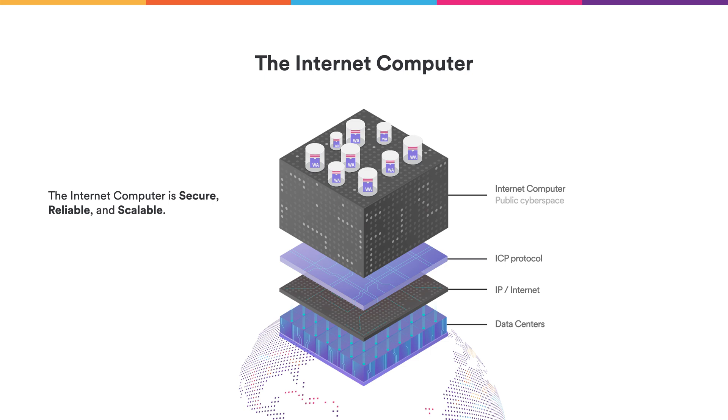The internet computer will allow users to write pieces of software that we call canisters, and these canisters can run on top of the internet computer in a very secure and reliable way. Secure meaning that the state of my canister will only change according to the rules of my canister and cannot be tampered with, and very reliable, meaning that my canister will not suddenly stop running. We want to achieve these properties while knowing that some machines across the world might have connection issues or might even be malicious.